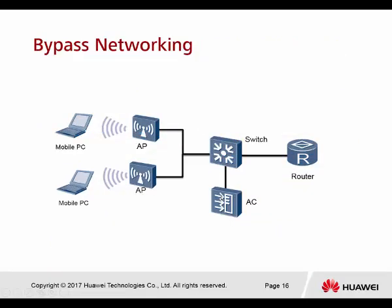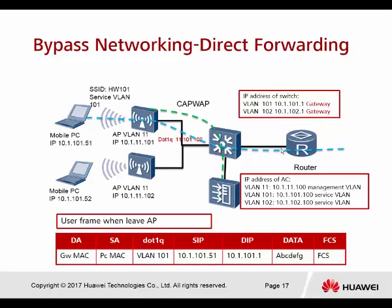Bypass networking: the AC is attached beside the switch. In inline mode versus direct forwarding or tunnel forwarding, you only notice differences in the source MAC address and IP address. In direct forwarding, the user data is sent directly to the gateway without returning to the controller. When doing a packet capture, the gateway points directly to the core switch. This is the PC MAC address, and it goes directly to the switch — the gateway MAC address.